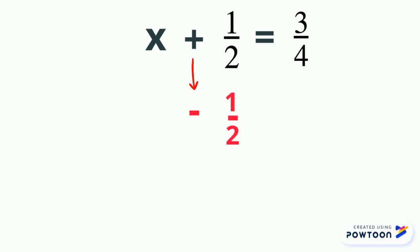So we must subtract 1/2 in order to isolate x by itself. And remember, whatever I do on one side of the equal sign, I must do on the other. So I have to also subtract 1/2 from 3/4.